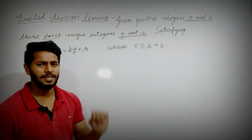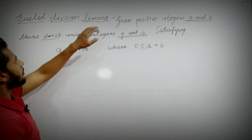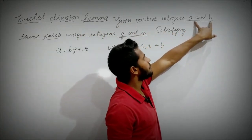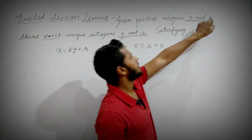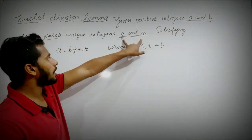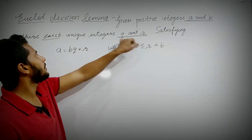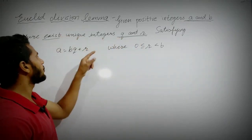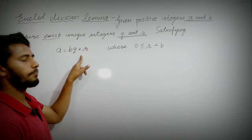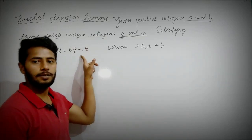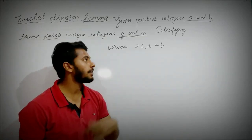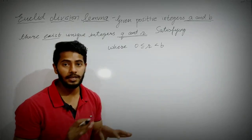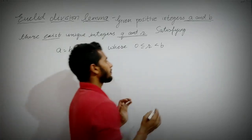For any two positive integers A and B, integers Q and R exist which will satisfy this condition. I will tell you something new about this condition — don't worry about that.